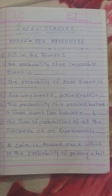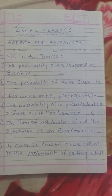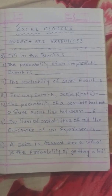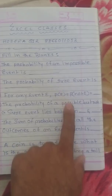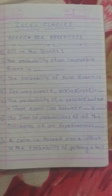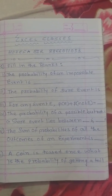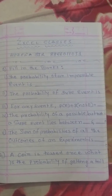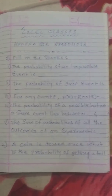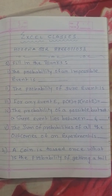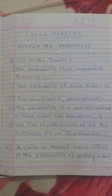Aur yeh aaj ka aapka homework hai. Fill in the blanks: the probability of an impossible event is — you know the answer. The probability of a sure event is — you know that too. For any event E, P(E) + P(not E) = ? And the probability of a possible event but not sure lies between which two numbers. Aaj ke yeh paanch sum aapko karne hain. Thank you guys.